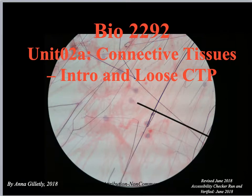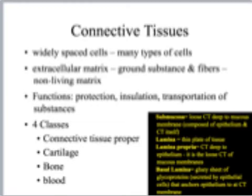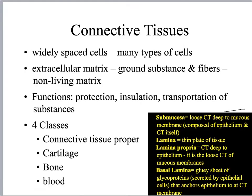We are going to start looking at Unit 2, which covers connective tissues and their histological structures. This 2A video lecture will go over the basics and then start talking about some of the loose connective tissue proper. Down here in this little black box there is a list of definitions of different terms that you might want to reference later on.